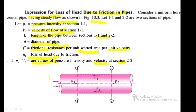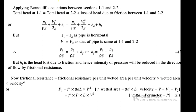Apply Bernoulli's equation between section 1-1 and section 2-2: total head at section 1-1 equals total head at section 2-2 plus loss of head due to friction between sections 1 and 2. This is the Bernoulli's equation, where section 1 is on the left and section 2 is on the right, and HF is the head loss due to friction.